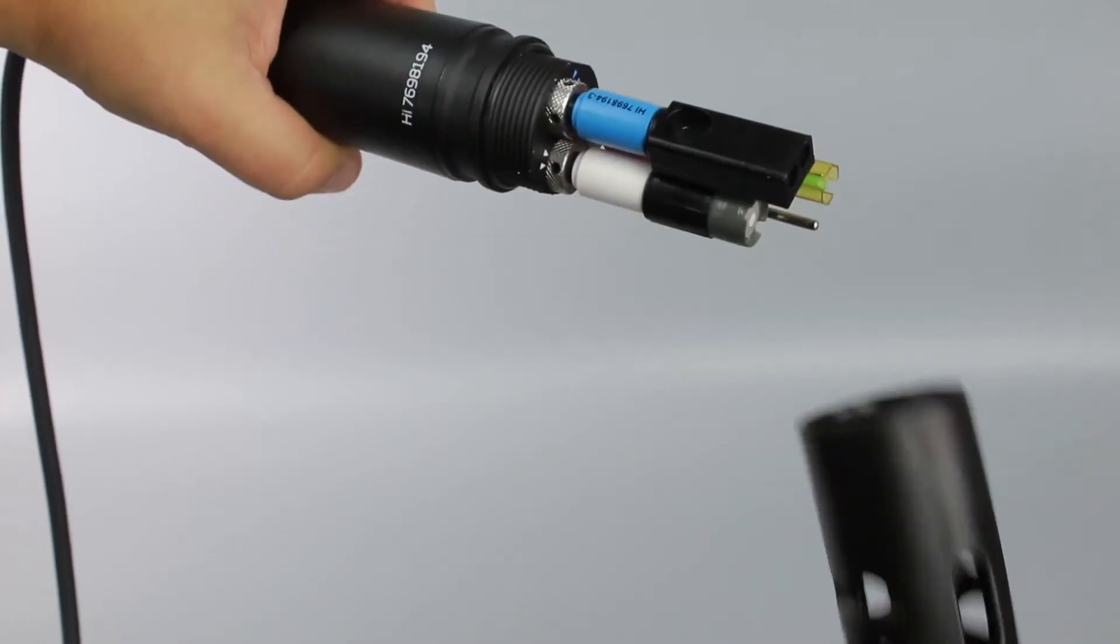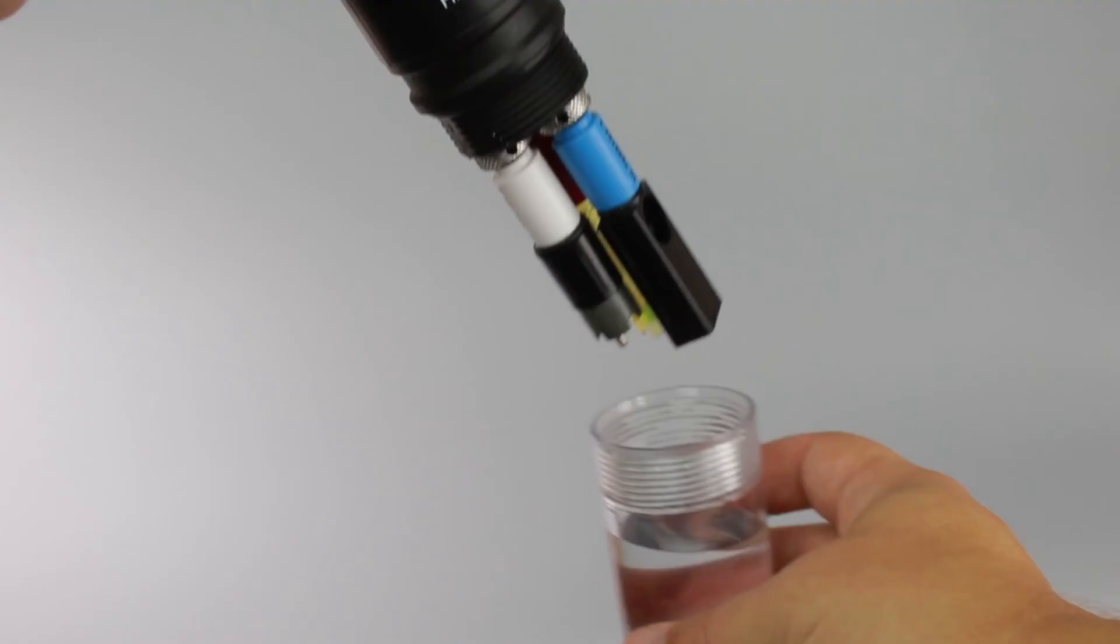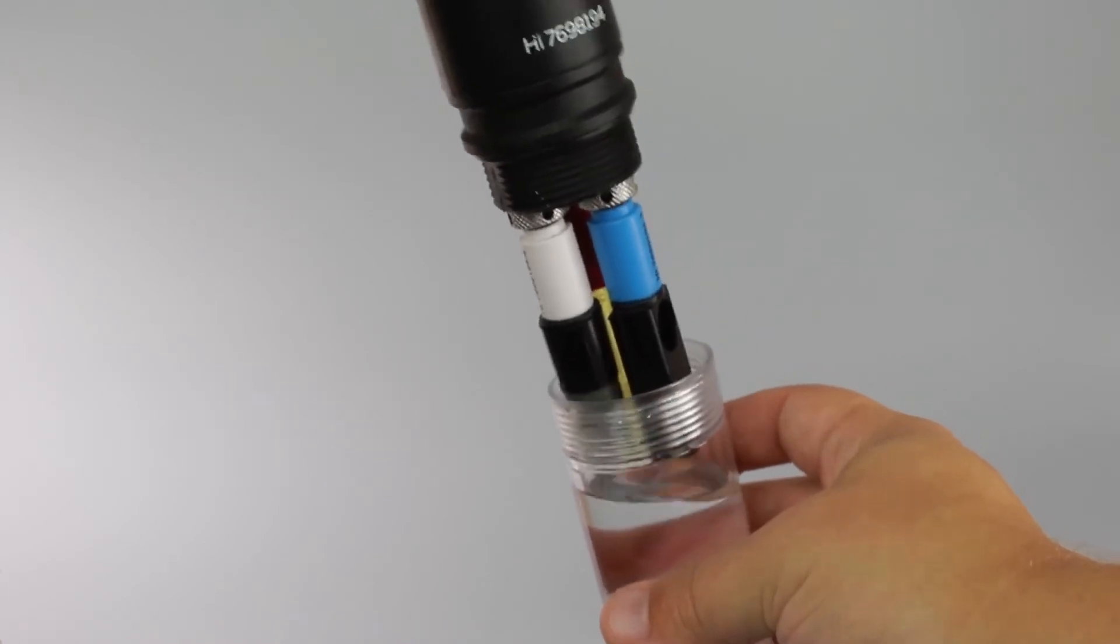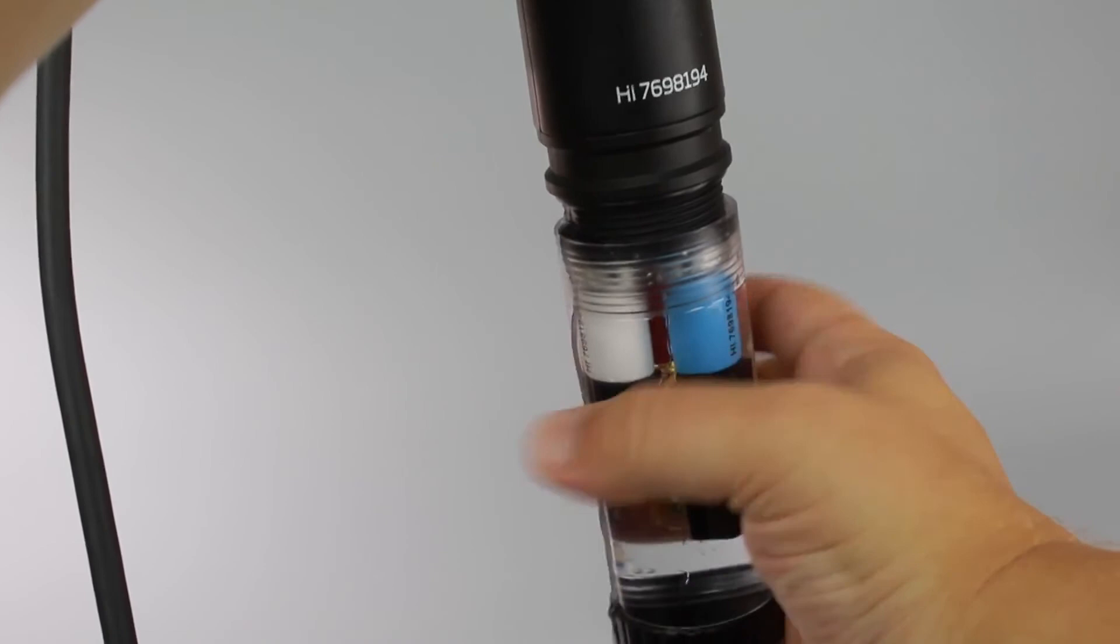To calibrate, remove the protective shield from the probe. Fill the supplied calibration beaker two-thirds of the way with your HI-9828 calibration solution. Submerge the sensors into the beaker and then screw the beaker onto the probe body. Don't worry if some solution overflows.